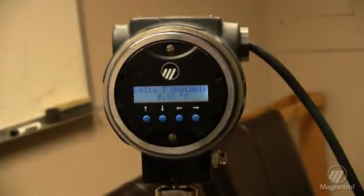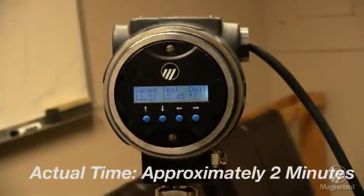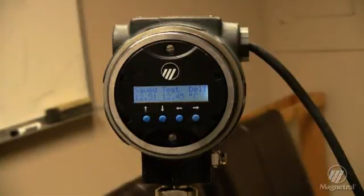In a short time, the temperature difference will stabilize and the two temperatures will show on the display. One is the original temperature difference between the sensors as it left the factory, and the other is the new temperature difference measured. If the values are within 1.5 degrees, the unit is still within calibration.